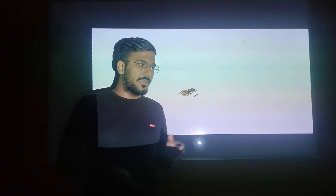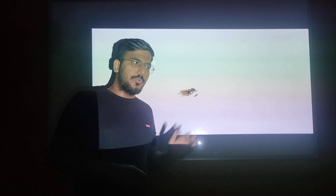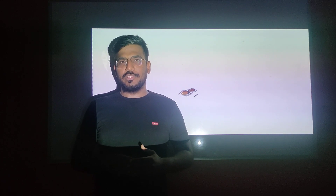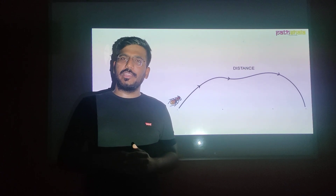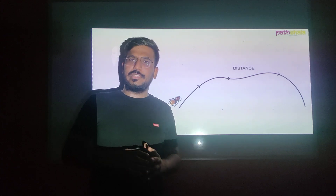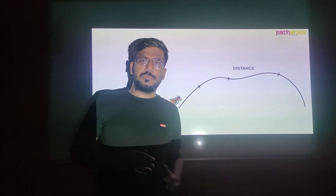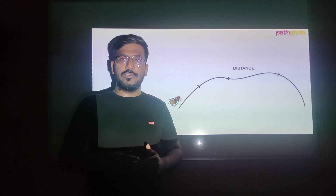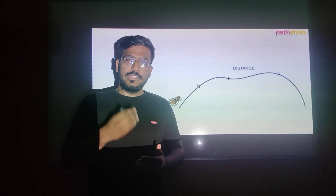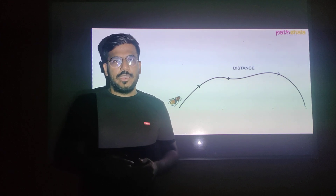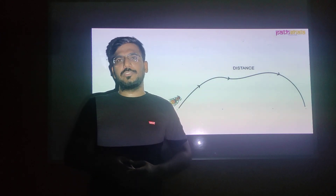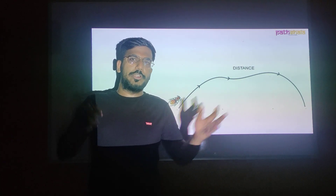Suppose we start with a very simple activity. There is an ant, and this ant wants to travel from one place to another. So suppose at this starting point, the ant starts travelling, and on the other end there is some sort of food which it wants to get. There are various paths the ant can take. This length or path which is covered by the ant is called the actual path, or actual path can also be called distance.